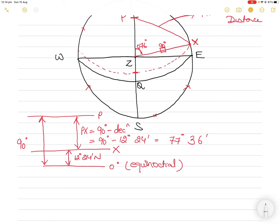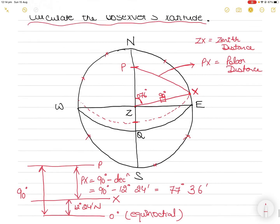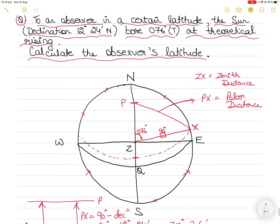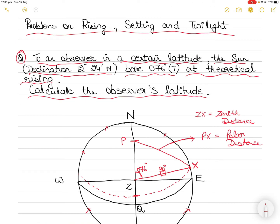Polar distance PX equals 90 degrees minus the declination. So 90 degrees minus 12 degrees 24 minutes gives us 77 degrees 36 minutes. That is your polar distance. The formula is: polar distance = 90 degrees minus the declination of the celestial body.